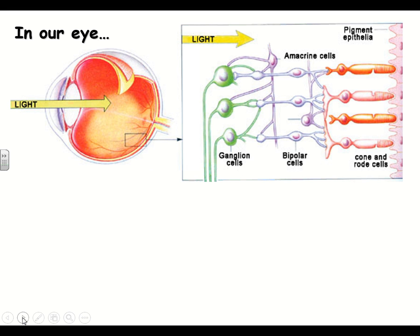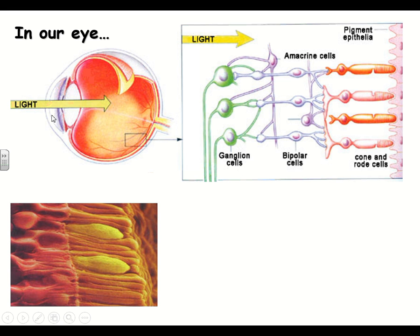Light comes into your eye and goes through the cornea — the curved front part — and then through the lens right behind it. On the back part of your eyeball you have the retina, which is where all the cells for seeing color are attached. Those are called cones and rods. The cones allow you to see color, while the rods allow you to see different shades because they're our black and white receptors.